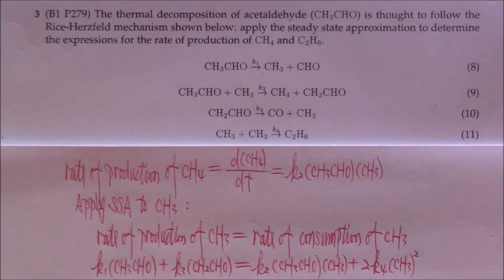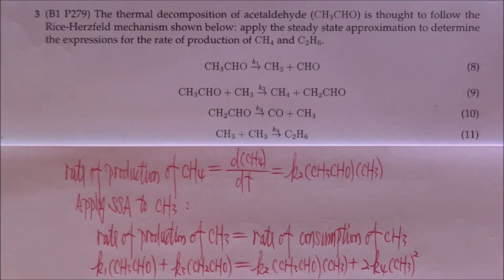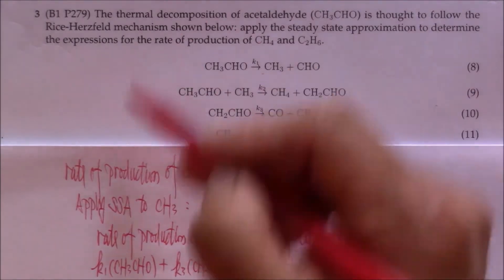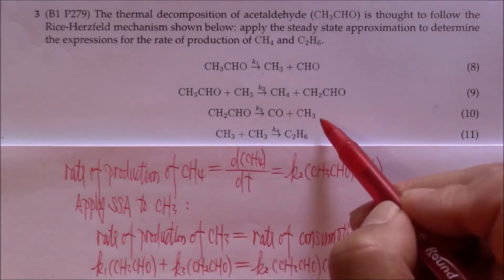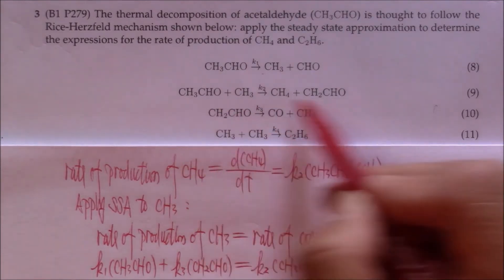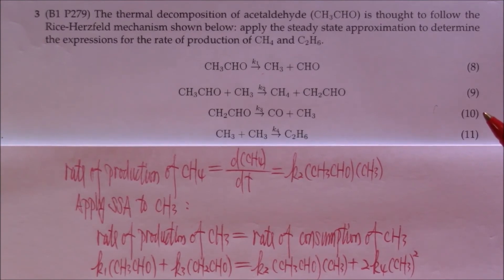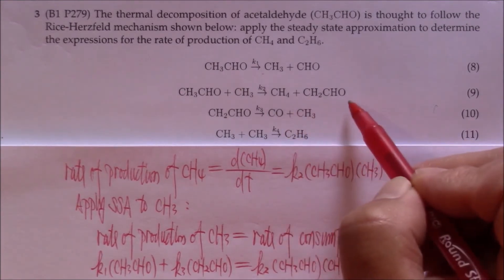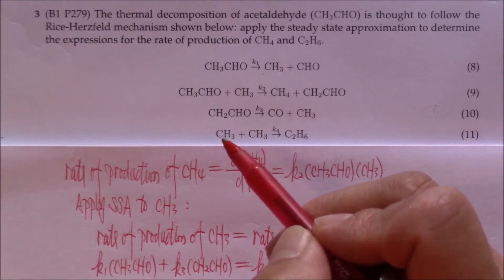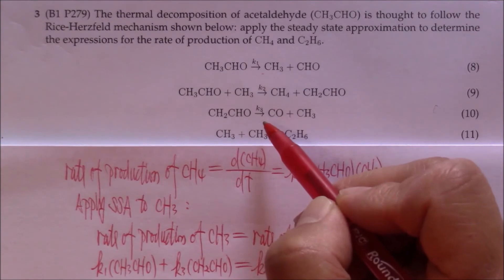Don't worry. If you have more intermediates, what you can do is apply the steady state approximation to the new intermediate. Now let's apply steady state approximation to CH2CH0. When we look at the four elementary reactions, the third reaction and the second reaction contain CH2CH0. To apply steady state approximation, we just set the rate of production of CH2CH0 equal to the rate of consumption of CH2CH0. Let me show you how to do it.